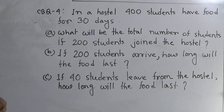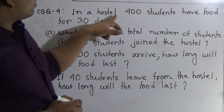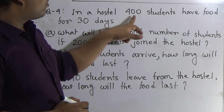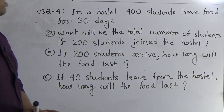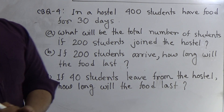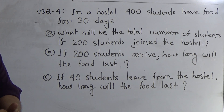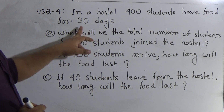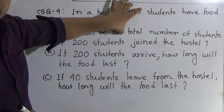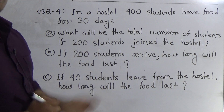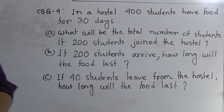At first we read the question — CBQ number 4. In a hostel, 400 students have food for 30 days. That means, in a hostel there are 400 students and they have food for 30 days. This is the stem of this question. By using this stem, we shall solve question number A, B and C.